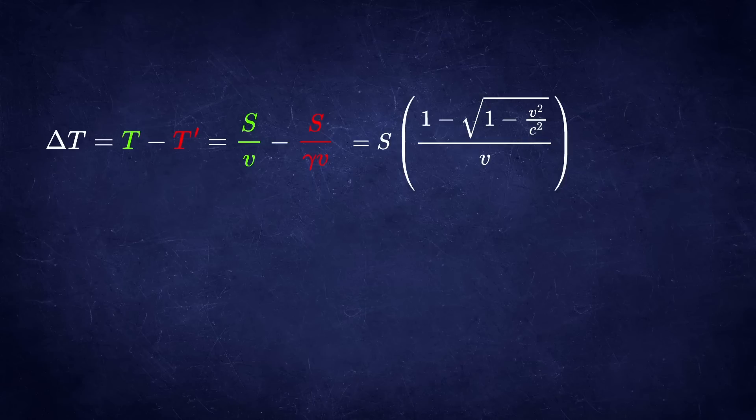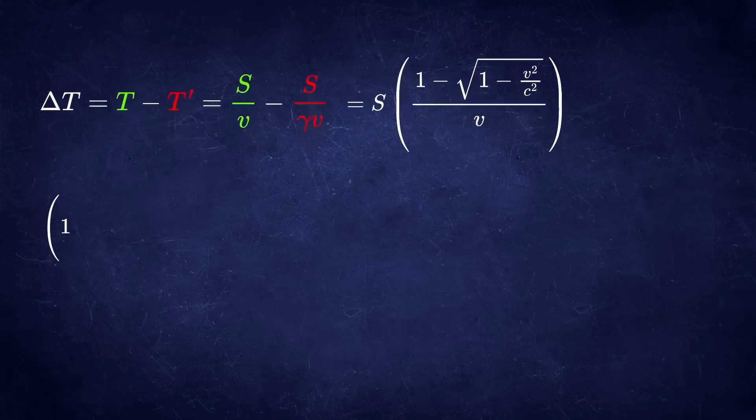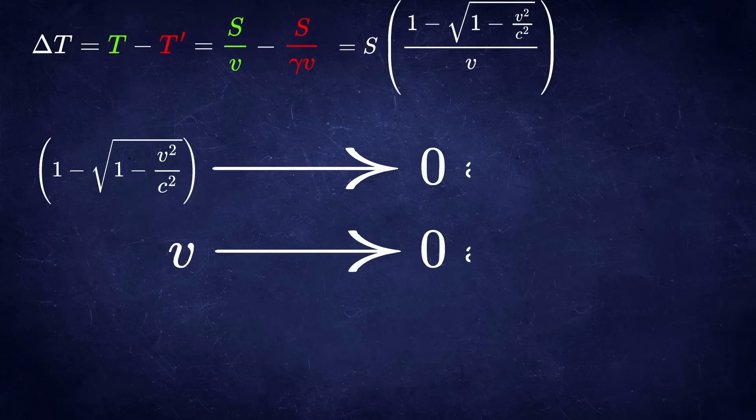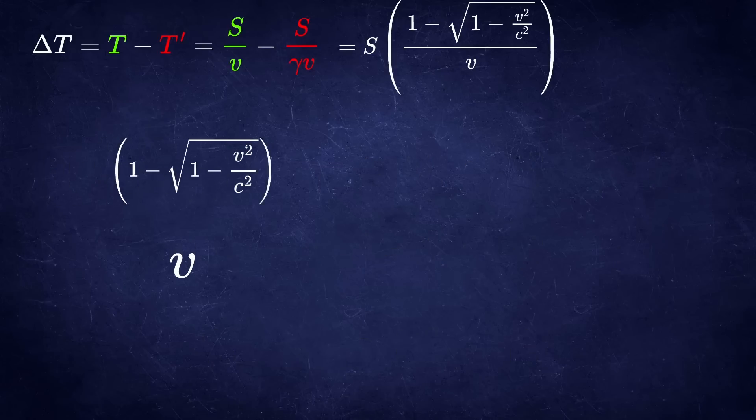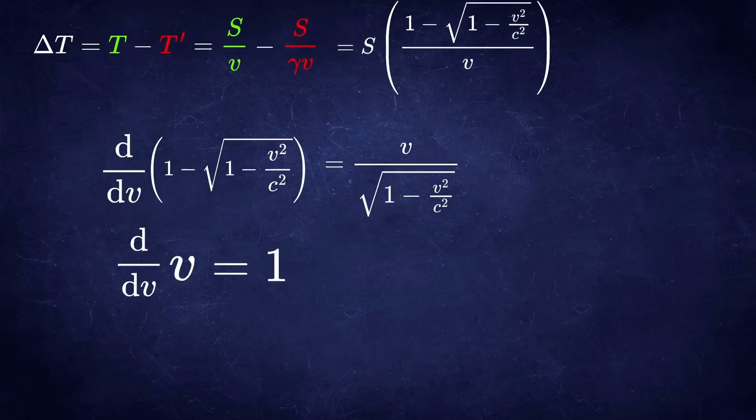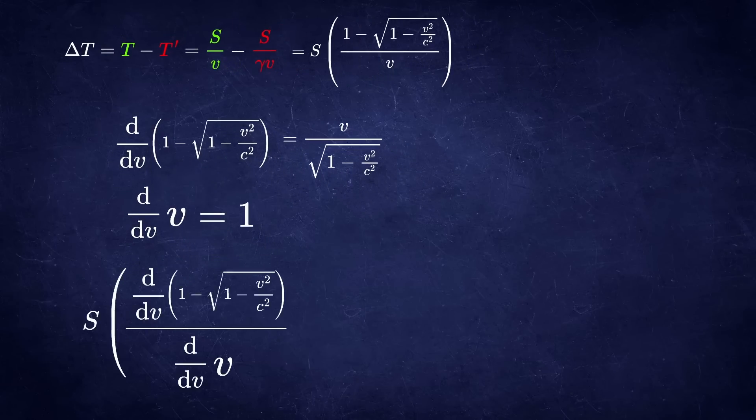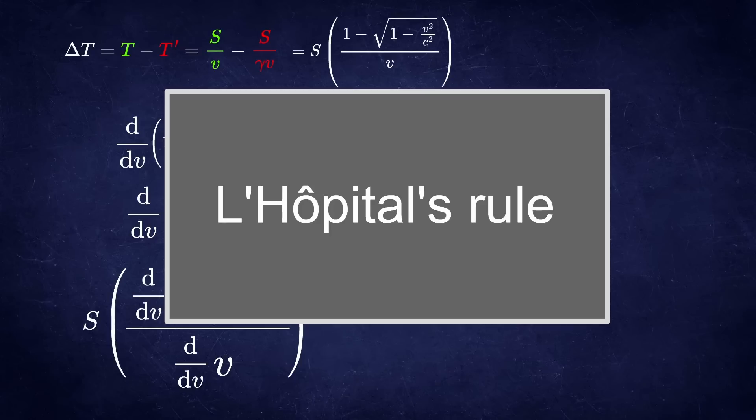To find out the limit behavior as the velocity goes to 0, you have to ask how fast are numerator and denominator converging to 0 respectively. To find out how steep is a certain curve, you find its derivative. Now you can compare derivatives instead. This method is called L'Hospital rule.